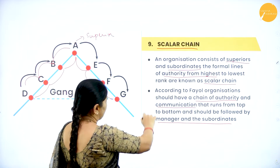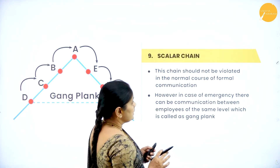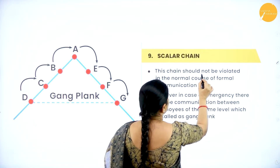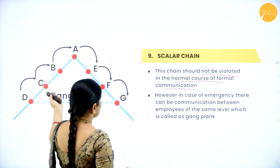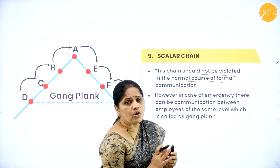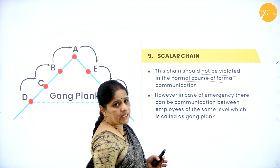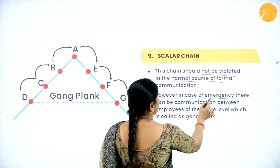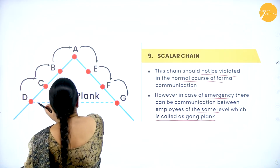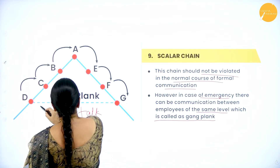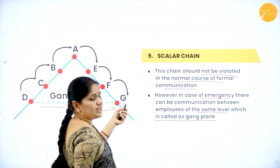The formal lines of communication should be maintained at all costs and should not be violated in the normal course of formal communication. However, in case of an emergency, communication between employees of the same level is permitted. For example, D can talk directly to G so that information can be conveyed faster.